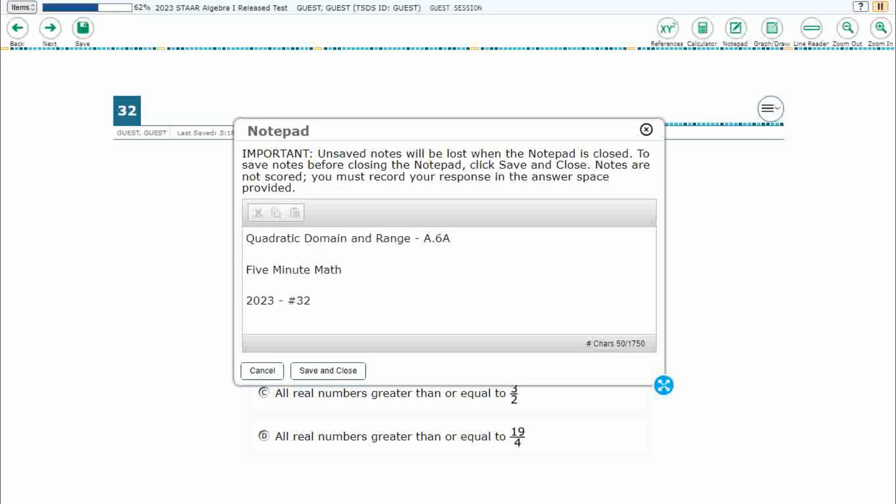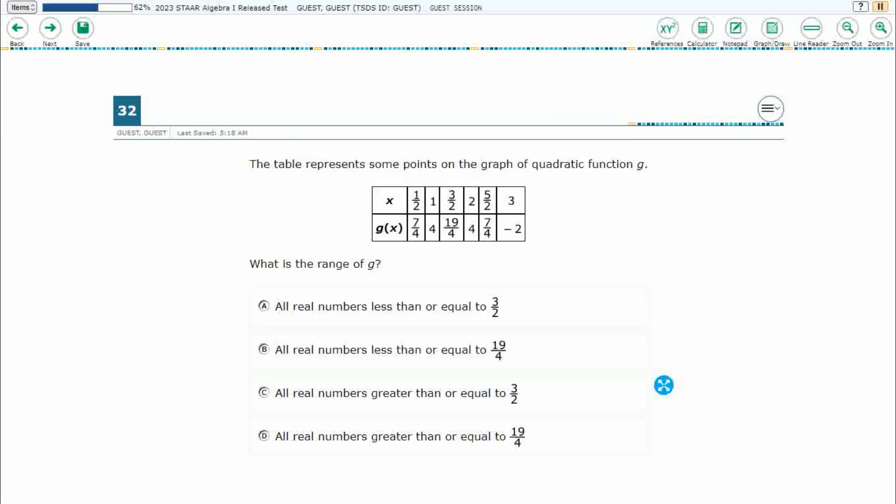Hello and welcome to 5-Minute Math. Today we are looking at the Algebra 1 concept of quadratic domain and range. This is standard A.6A in the great state of Texas and we are using item number 32 of the 2023 released STAAR test.